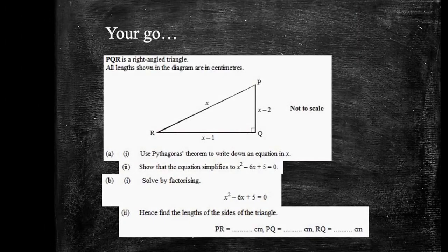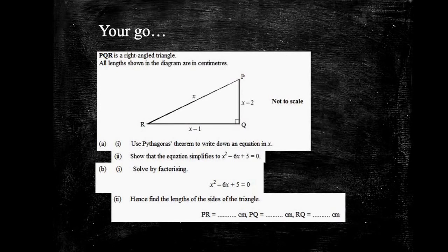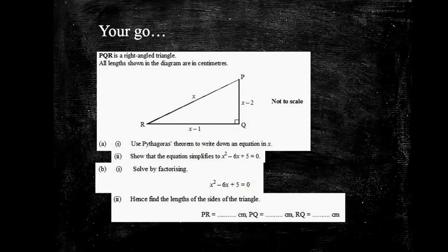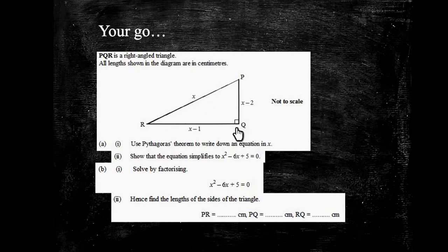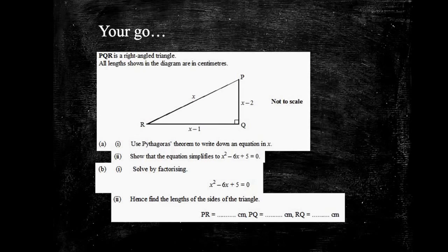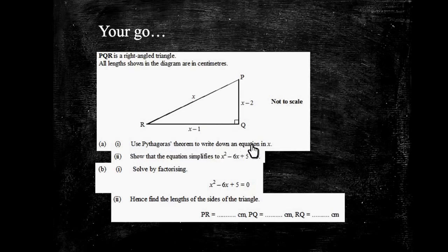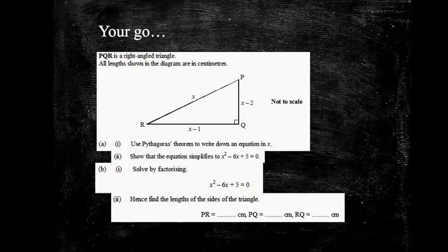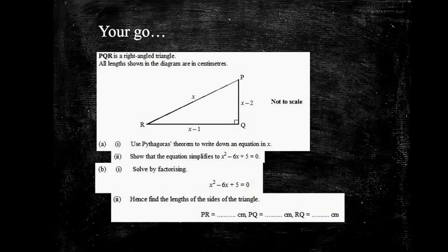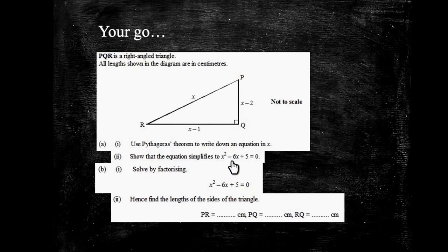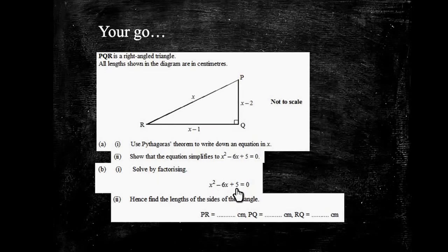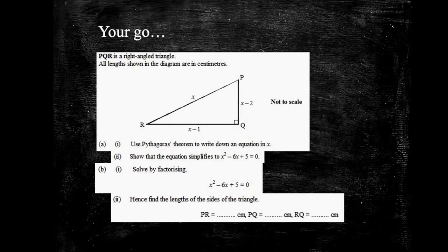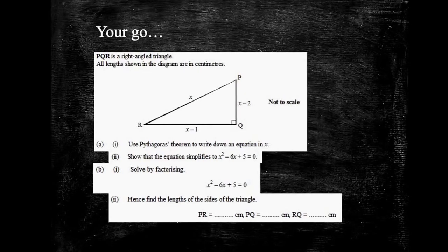I want you to have a go at one here. I'm going to talk very quickly about what it is that it's asking you to do. And then you can pause the video, have a go, and see if you can work out the answer. So here we've got a right-angled triangle. PQR is a right-angled triangle. We've got lengths of X, X minus 2, and X minus 1. Part A says use Pythagoras' theorem to write down an equation in X.